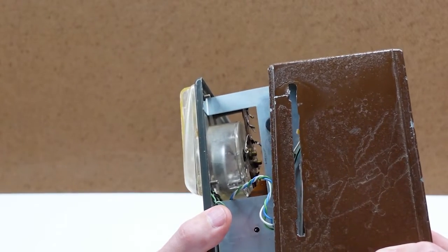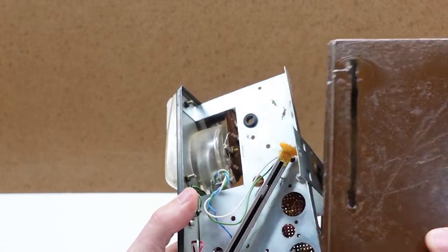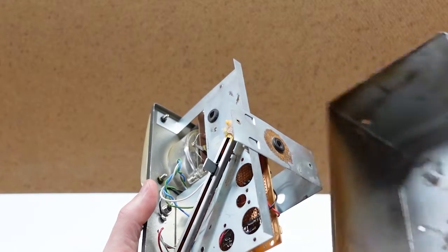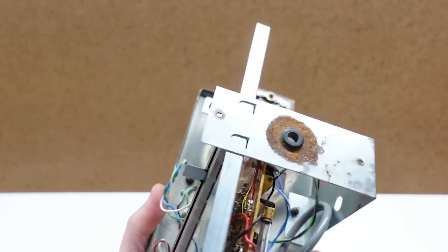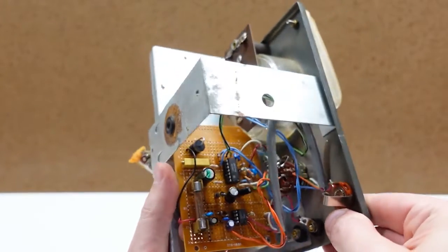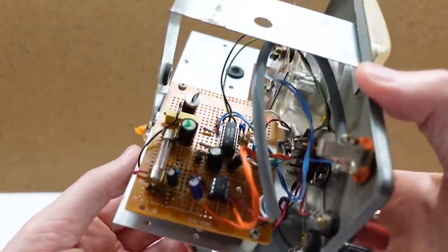Looking inside only adds to the bad news. It's been completely gutted. None of the original Heathkit circuit remains. No tubes, no attenuator, no power supply transformer. They're all gone.